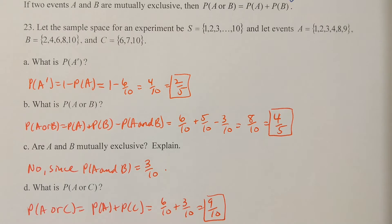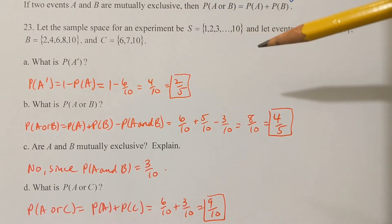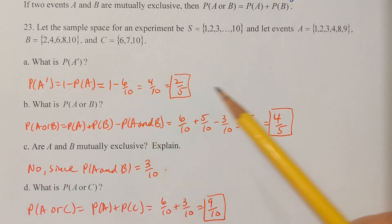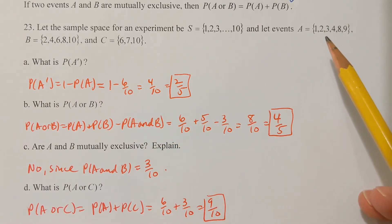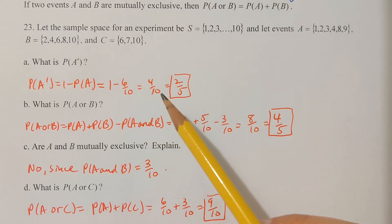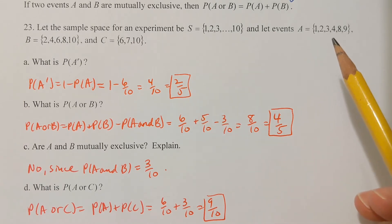Problem 23: let the sample space be the counting numbers 1 through 10, and there are three events in the sample space: A, B, and C. Part A: what is the probability of A complement? Using the complement rule, the probability of A complement equals 1 minus the probability of A. There are 6 things in A out of 10 things in the sample space, so 1 minus 6 over 10 equals 4 over 10, which reduces to 2 fifths.